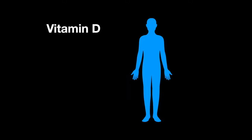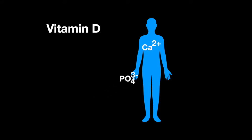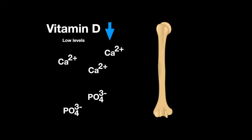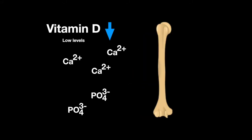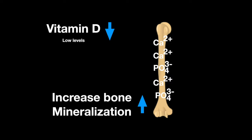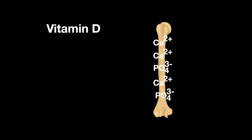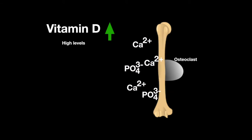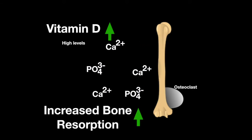Vitamin D allows your body to absorb calcium and phosphate. Low levels of vitamin D increase bone mineralization, or the process at which bone is filled with calcium phosphate crystals. At high levels, bone resorption increases, or the process of osteoclasts breaking down the bone to release minerals like calcium.